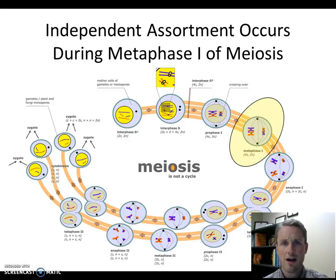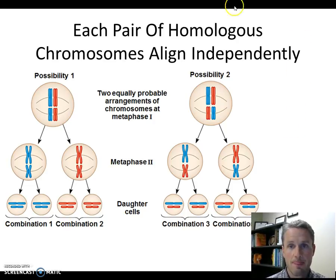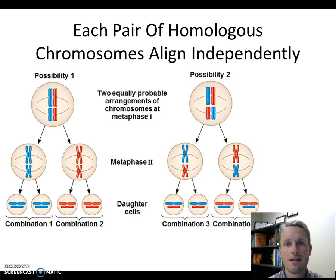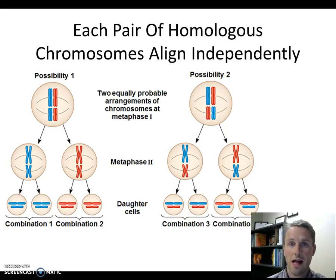During independent assortment, each pair of homologous chromosomes aligns independently. What I mean by that is that when these chromosomes line up on the metaphase plate, the way the first pair of chromosomes lines up has no effect on what will happen with the second pair of chromosomes. These events are what we call independent.